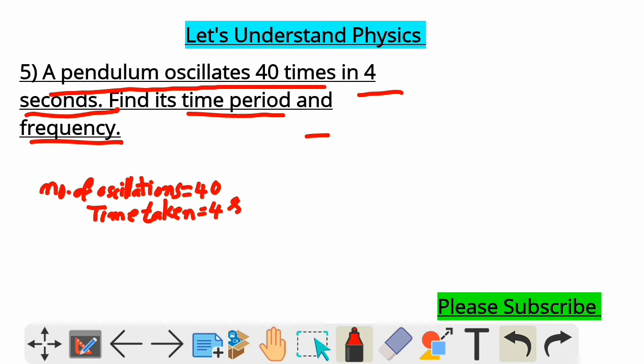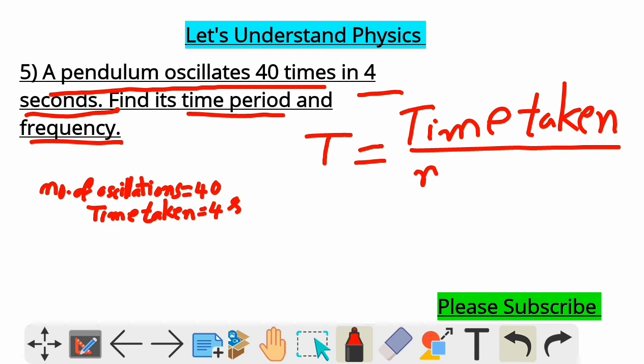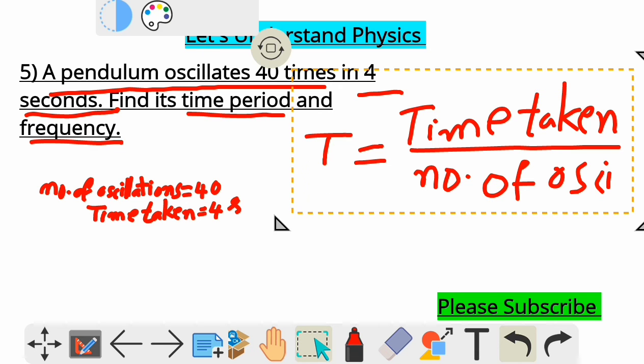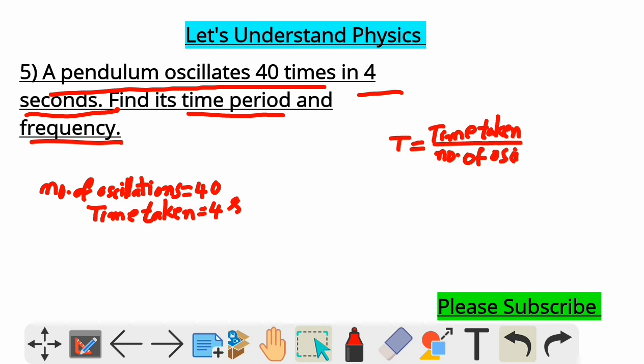Just now by using these two data, we have learnt formula. Now, what is time period capital T is equal to formula? Time taken by number of oscillations. You can write simply time taken small t and number of oscillations n so that it will be easy for you. But before writing those alphabet representation, write the formula so that it will be easy and understandable to solve. So, time taken by number of oscillations. I am just substituting T is equal to 4 seconds, 4 by number of oscillations 40.